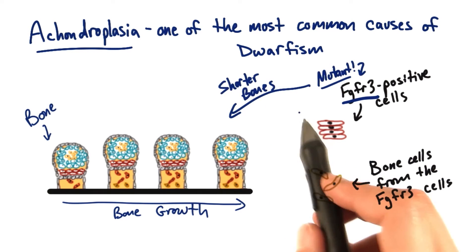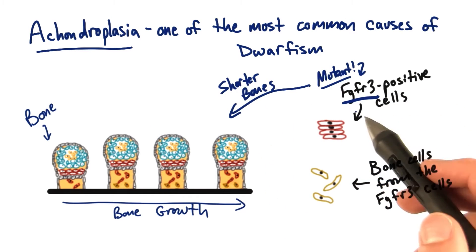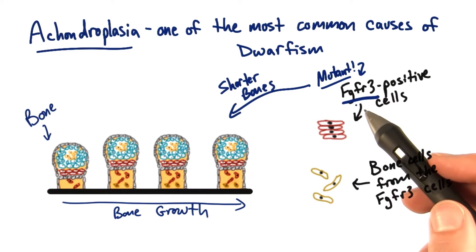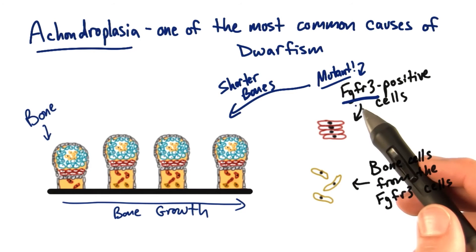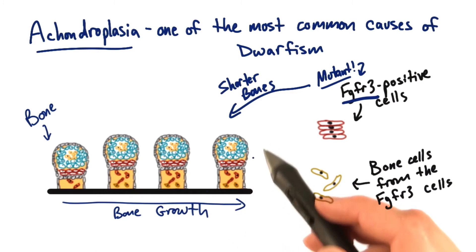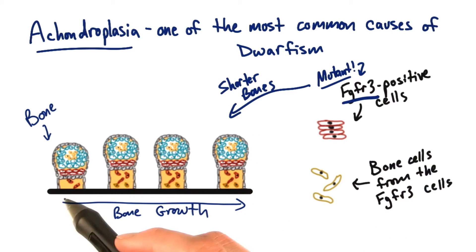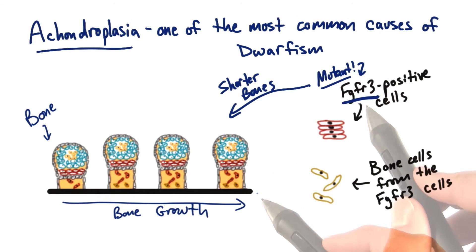But some mutations in the FGFR3 gene result in a protein that's overactive, and it actually stunts the growth of bones even more so that they can't grow as long as they normally would.